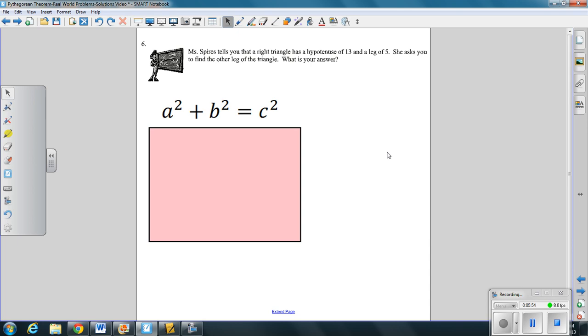Number 6. Ms. Spears tells you that the right triangle has a hypotenuse of 13 and a leg of 5. So we know two things here. We know the hypotenuse and we know a leg. So here's hypotenuse and here's a leg. She asks you to find the other leg of the triangle. What is your answer?